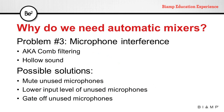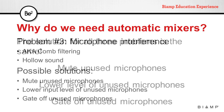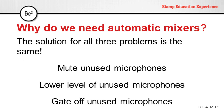So problem number three is microphone interference, also known as comb filtering — that hollow sound we hear when two microphones are picking up the same signal. And it seems that the solution for all three problems is exactly the same: mute unused microphones, lower the input level of unused microphones, or gate off unused microphones.